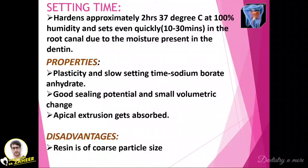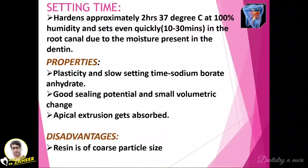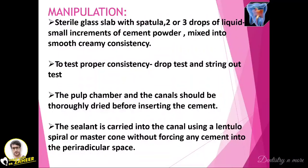The setting time: it hardens at approximately 37 degrees Celsius at 100% humidity, and sets even more quickly — within 10 to 30 minutes — in the root canal due to the moisture present in the dentine. Its properties include plasticity, slow setting time, good sealing potential, and small volumetric change after setting. Apical extrusion gets absorbed into the tissues so it does not create periapical problems. The disadvantage is the resin particle size. For manipulation, use a sterile glass slab and spatula with two to three drops of eugenol, mixing small increments of powder to a creamy consistency.